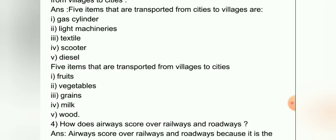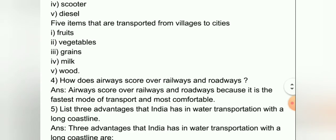Five items that are transported from villages to cities are: number one fruits, number two vegetables, number three grains, number four milk, and number five wood.